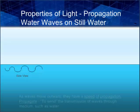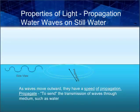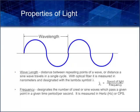To help illustrate how light waves work, let's look at how waves work in still water. Wave propagation describes how waves travel through a medium such as water or glass. As waves move outward, they have a speed of propagation. Light waves have similar properties, although with electromagnetic waves, propagation may occur in a vacuum as well as in a material medium.